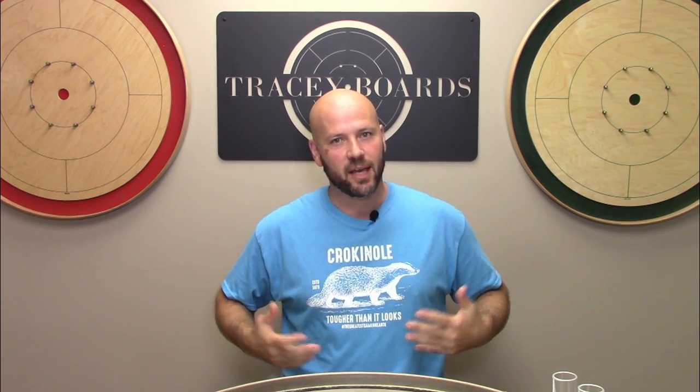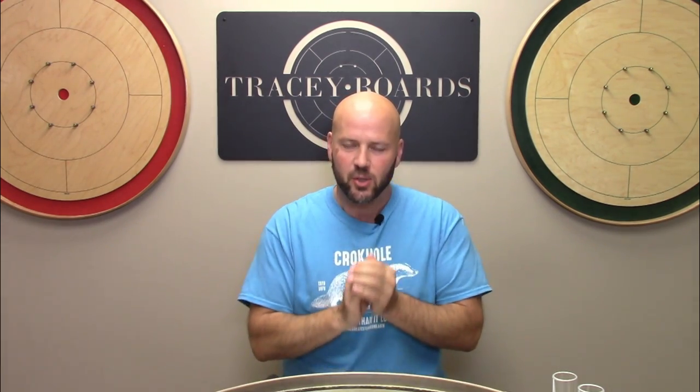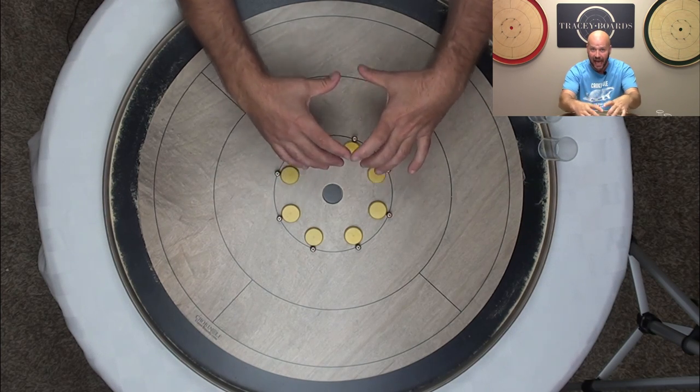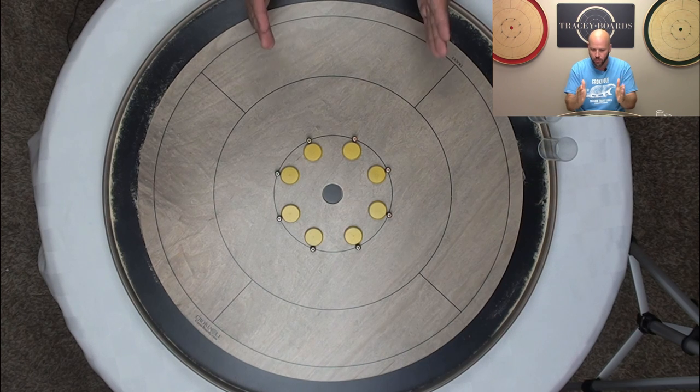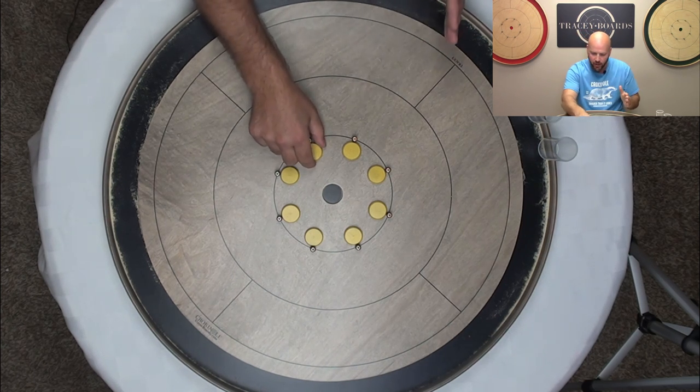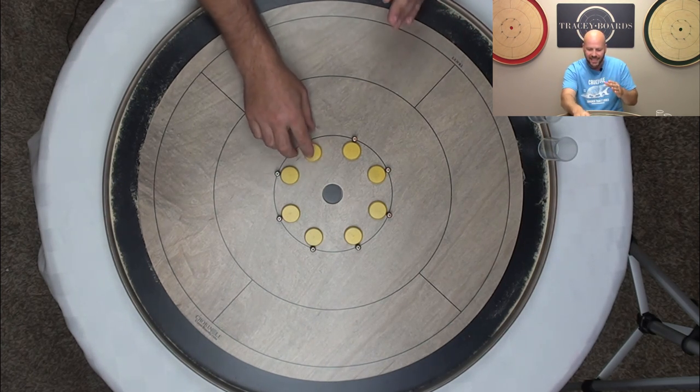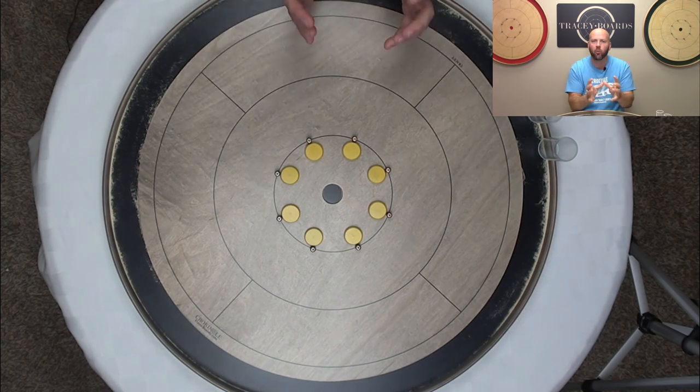So this drill, just like what my shirt says, tougher than it looks. This drill is absolutely tougher than it looks. So we're trying to get a little more clever with the names. This one we are going to call the all-in drill. You're taking the eight opponents buttons and setting them all inside of the pegs. We don't measure, we're not getting super precise, but basically straight between the peg and the center hole, touching the pegs all the way around.